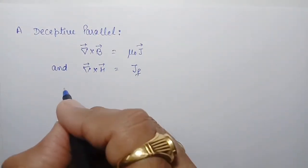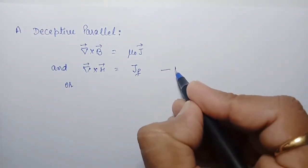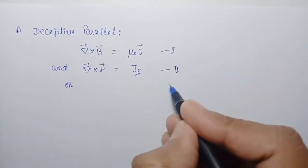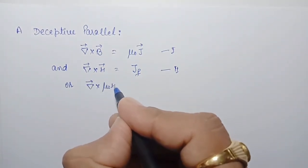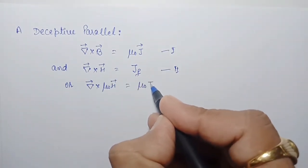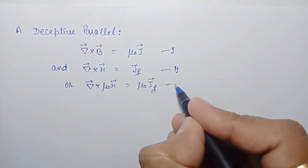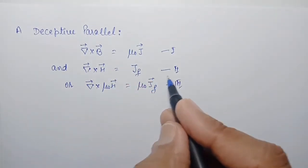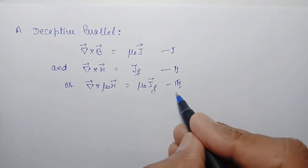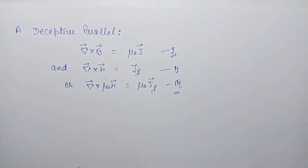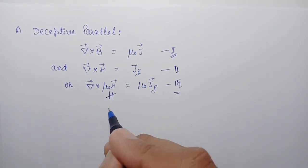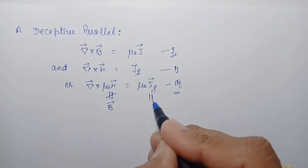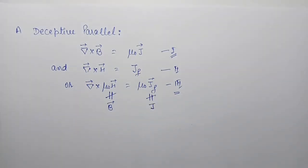Suppose we multiply the second equation by mu naught; then we can write del cross (mu naught H) equals mu naught j_f. Even then, this third equation is not equal to the first equation. Why? Because mu naught H is not equal to B, and the free current is not equal to the total current. So these two are the misleading parallels.